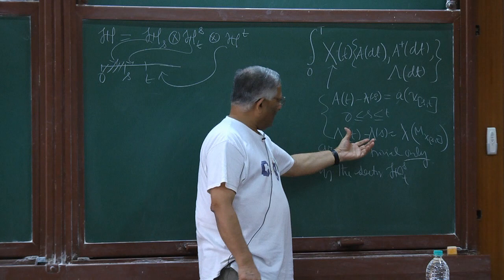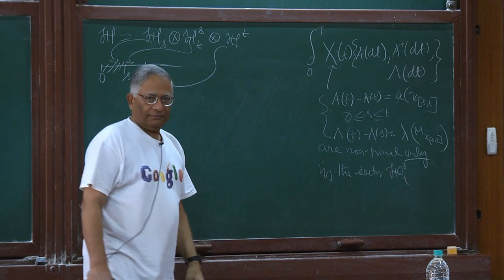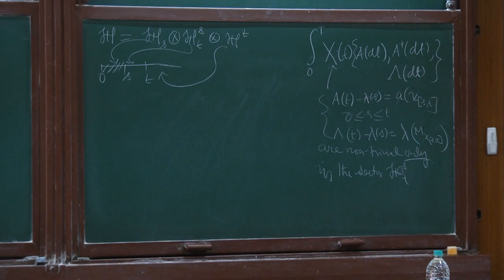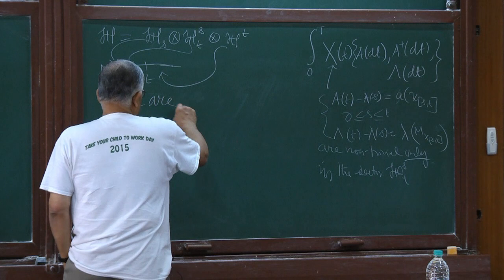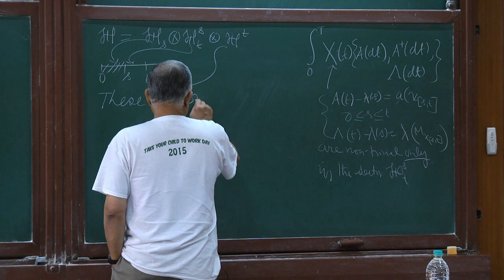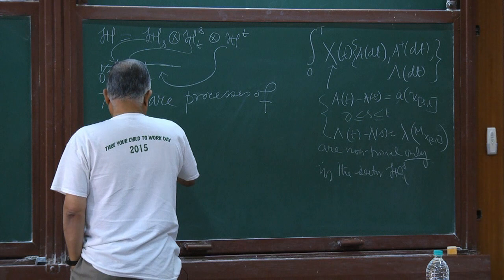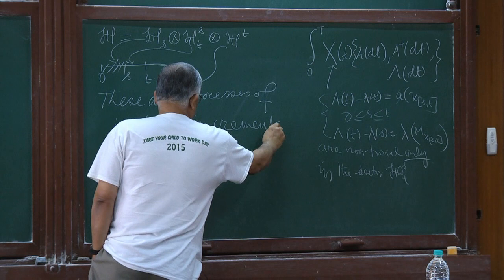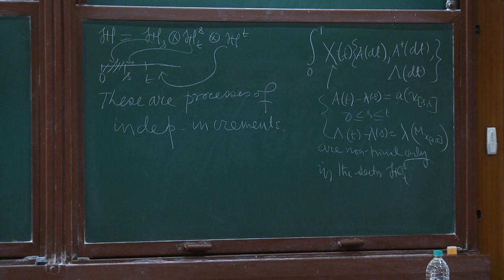They are non-trivial only in this part — by non-trivial I mean the rest of it is identity. Such things are called processes of independent increments — the terminology is borrowed from probability theory, but we can ignore that. They live only on the incremental part of the component.